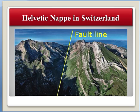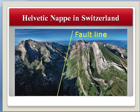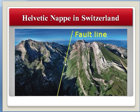See the best example of nappe structures. This is the Helvetic nappe in Switzerland. This is the fault line, and this is the nappe structure — this one block of rock is overturned into this position. So this is all about nappe structures.